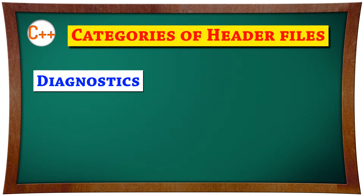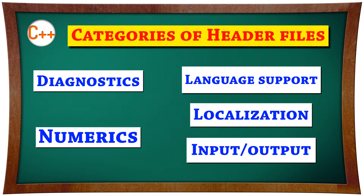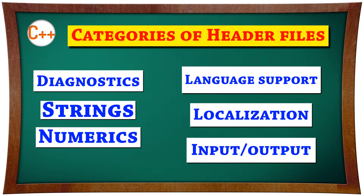Header files are divided into categories: Diagnostics, Input-Output, Language Support, Localization, Numerics, and Strings. Let's learn what each one is for.